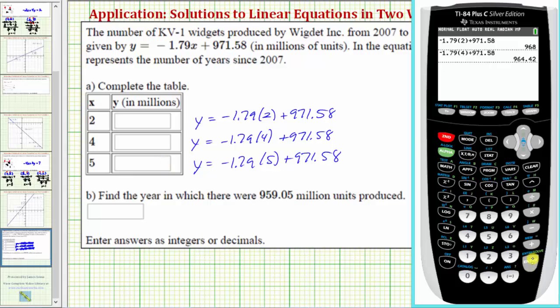So second, enter, arrow to the left, and change the four to a five. Enter. So we have y values of 968, 964.42, and 962.63.